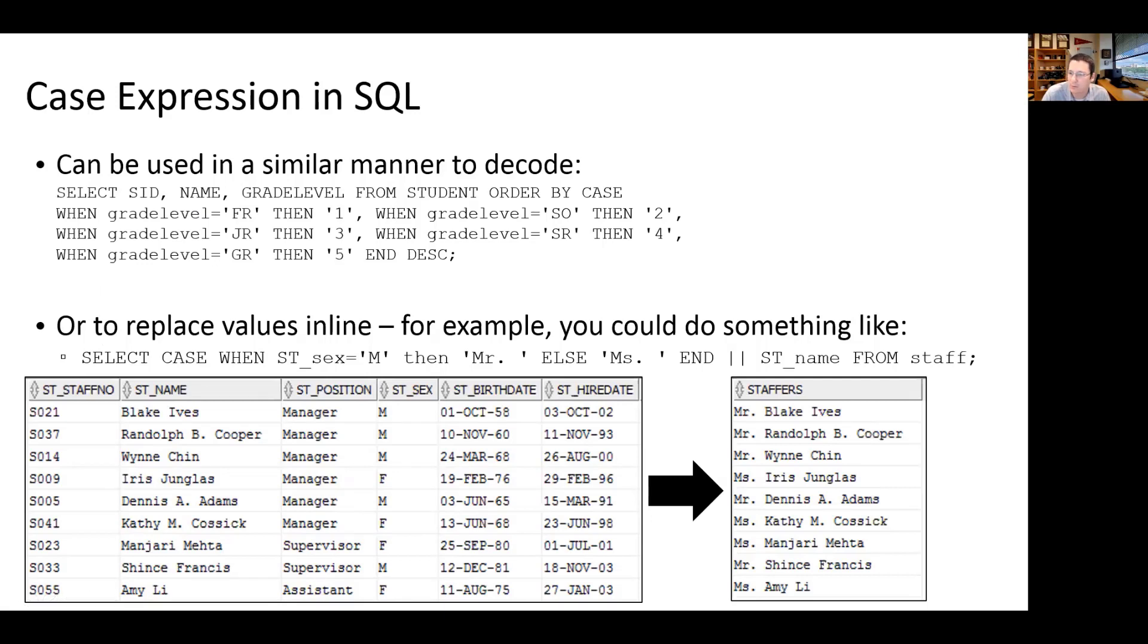Or we could do something clever like this: in our SELECT statement, have a CASE expression that looks for the value of this ST_SEX attribute, and if the value is M, then we're going to output Mr., or we could say if the value is F, but since we're just looking for people who aren't male, we could say else we're going to output this value of Ms., and then concatenate that to the value of ST_NAME, which would give us Mr. Blake Eyes, Mr. Randolph B. Cooper, Ms. Iris Junglas, and so forth down the line.